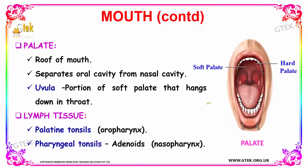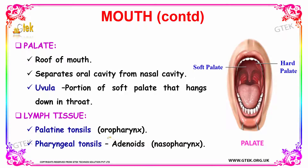Your lymph tissue is the next portion, which has palatine tonsils also known as the oropharynx. Your pharyngeal tonsils contain the adenoids, which is the nasopharynx.